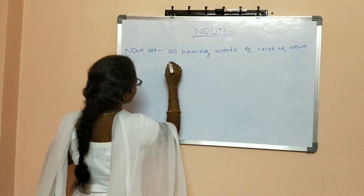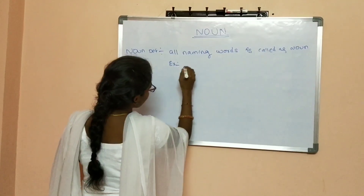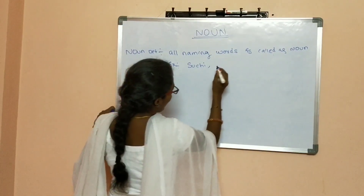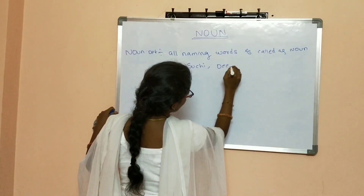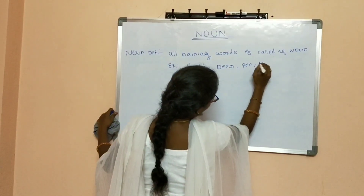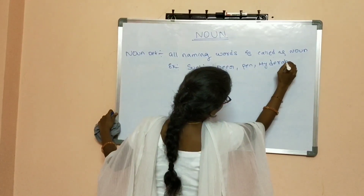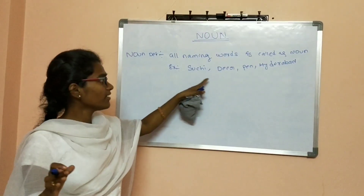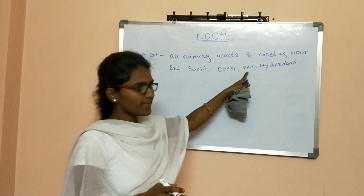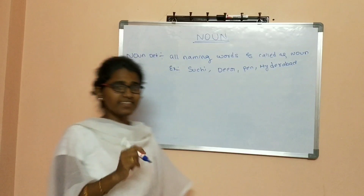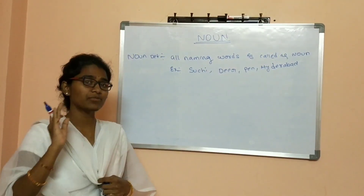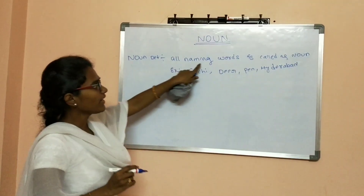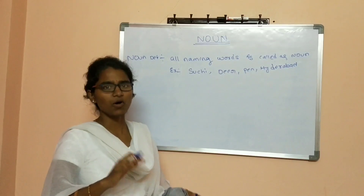Examples: Suchi, animals like deer, pen, Hyderabad. Here, Suchi is related to a person, deer is related to an animal, pen is related to a thing, and Hyderabad is related to a city. These are all types of names, so all naming words are called nouns. Simply, a noun is a naming word.